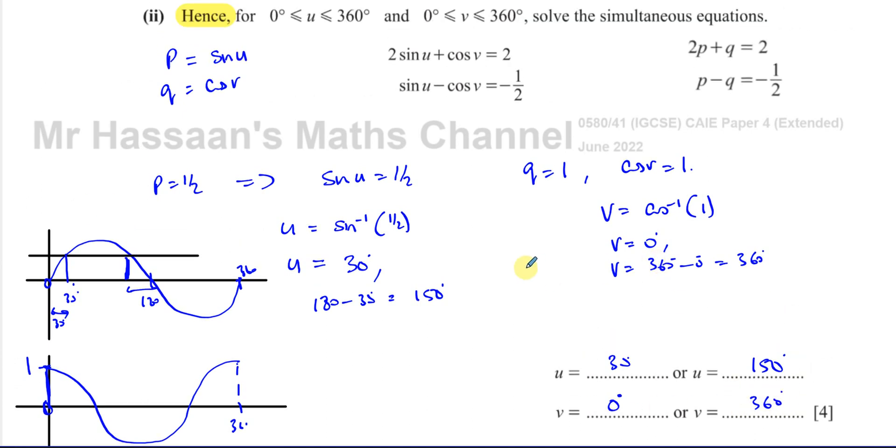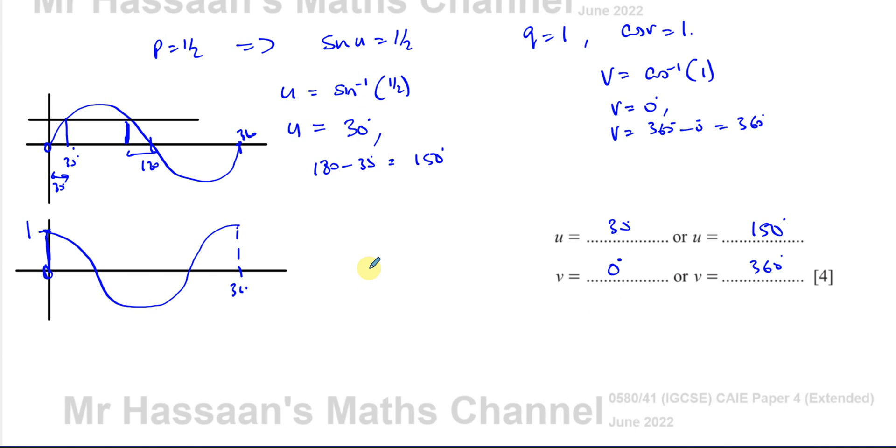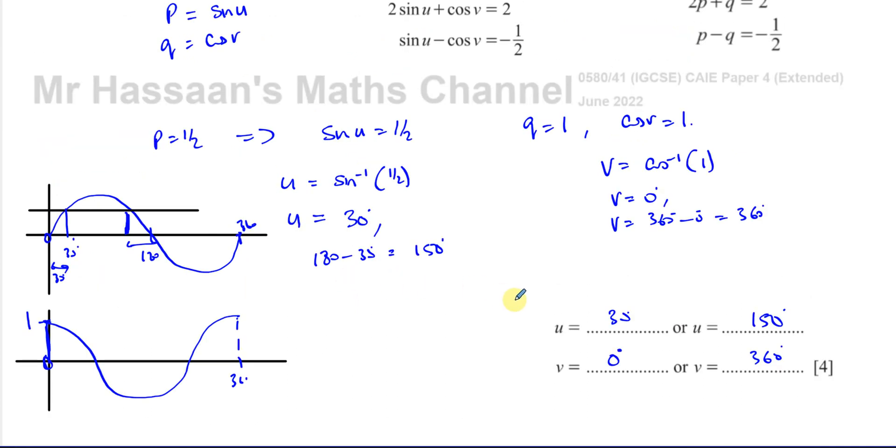You can check to make sure—yes, both 0 and 360 are to be included in our answers. So those are the solutions within those ranges for these two equations.